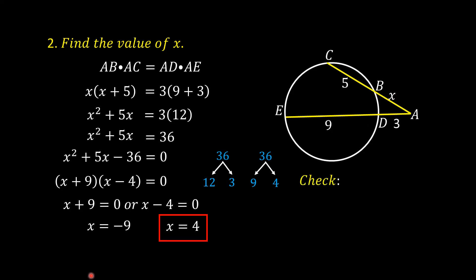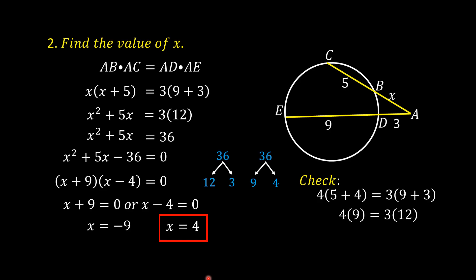Let us check. The value of X is 4. So 4 times (5 plus 4) equals 3 times (9 plus 3). So 4 times 9 equals 3 times 12. 4 times 9 is 36, and 3 times 12 is 36. This is a true numerical statement. Therefore, the value of X is really equal to 4.